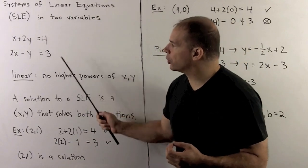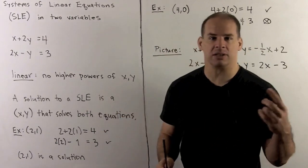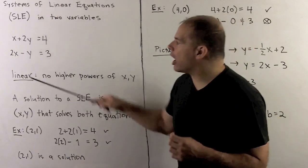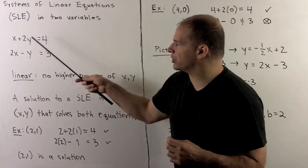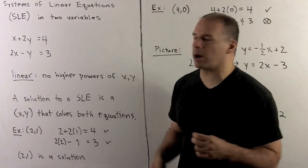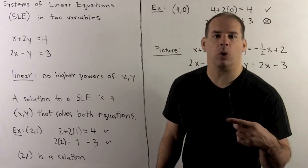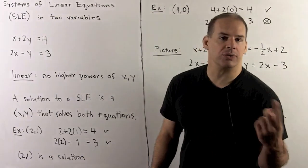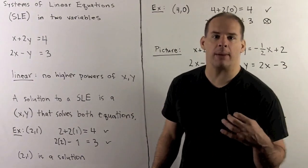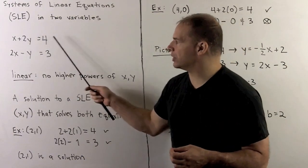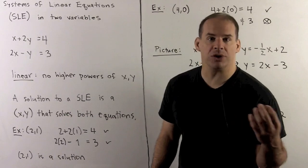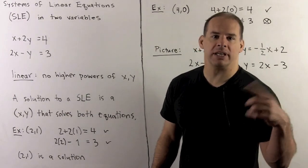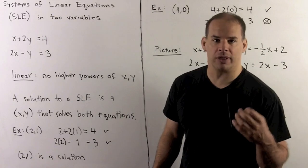We're interested in solutions to systems of linear equations. Recall, if I had just the equation x plus 2y equals 4, the solution is going to be any point (x, y) that makes this statement true. For instance, if we took (2, 1): 2 plus 2 is equal to 4, so (2, 1) is a solution. We can then plot that point on the graph to get the picture of the line.